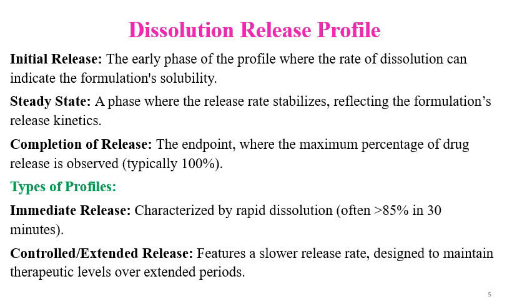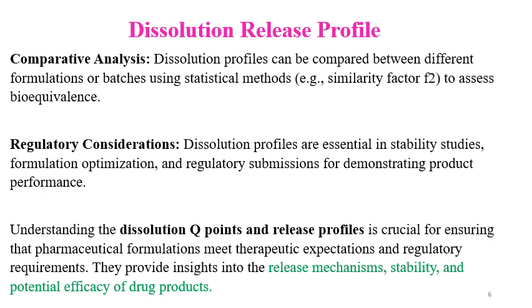Immediate Release means the release profile or dissolution is rapid or very rapid. For a Very Rapid Dissolution Profile, it will be above 85% within 15 minutes. For a Rapid Profile, it will be above 85% in 30 minutes. Controlled Release Profile features a slower release rate and is designed to maintain therapeutic levels over an extended period. Comparative analysis can be done with Dissolution Release Profiles — dissolution profiles can be compared between different formulations and different batches using statistical models such as Similarity Factor calculation, F2 calculation, Bootstrapping Method, and MSD Method to determine whether the dissolution profiles are similar or not.